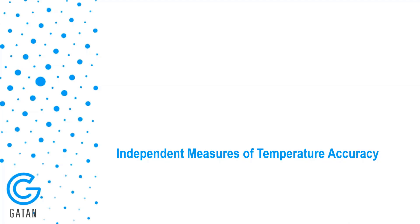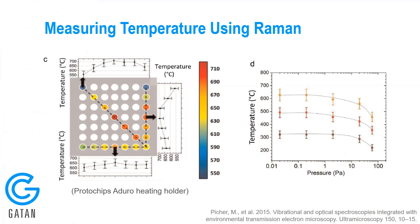Several groups around the world have published independent measurements of temperature accuracy. Here's an example using Raman spectroscopy — I want to preface that this is an older design of a Protochips holder, not their new technology, so the result is a bit outdated, but the technique is what I want to focus on. This was done at NIST, and they were able to use Raman spectroscopy inside the microscope to measure the temperature of a sample on the electron transparent windows, enabling quantitative measurement of temperature while the holder is inside the microscope.